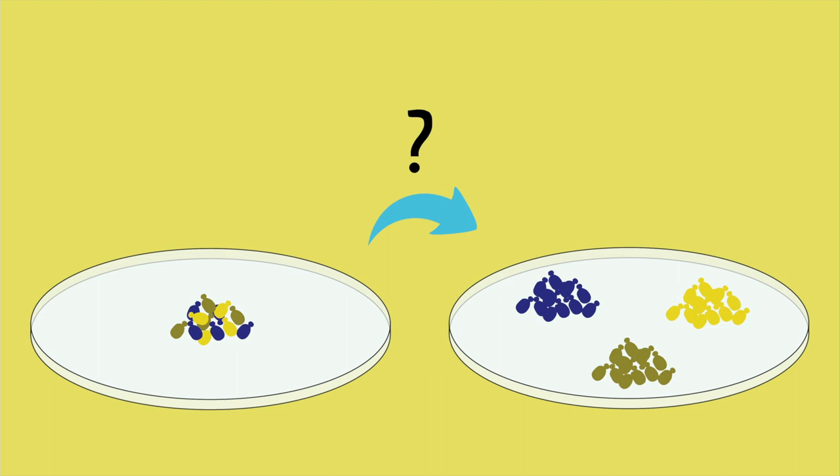So how do you go from a pile of mixed up cells to single colonies? Well, you streak for singles.